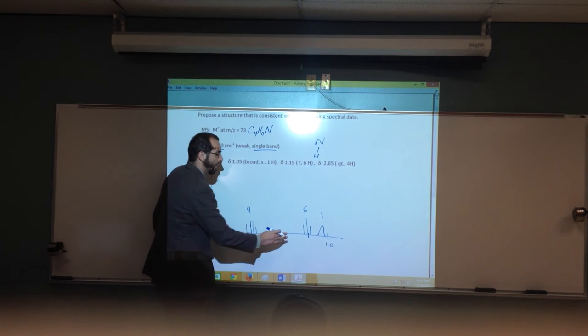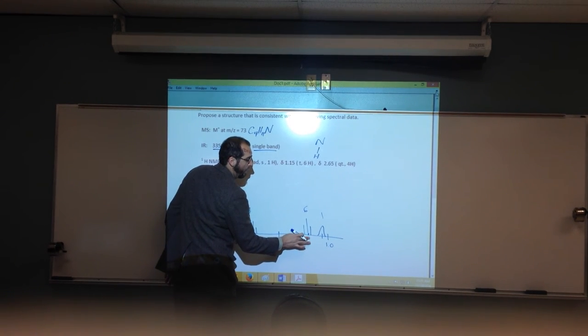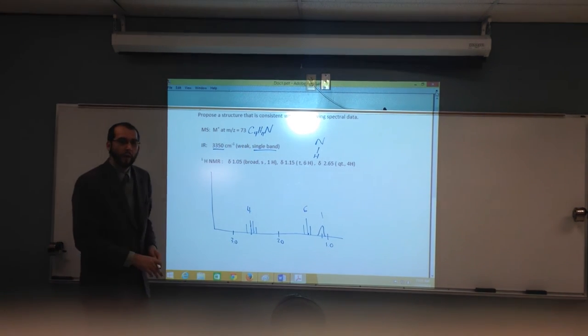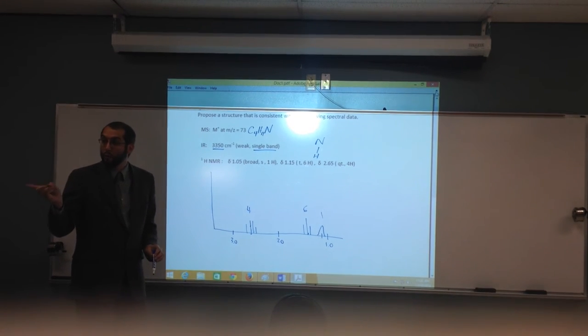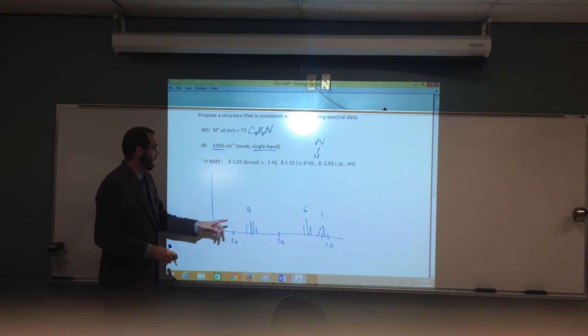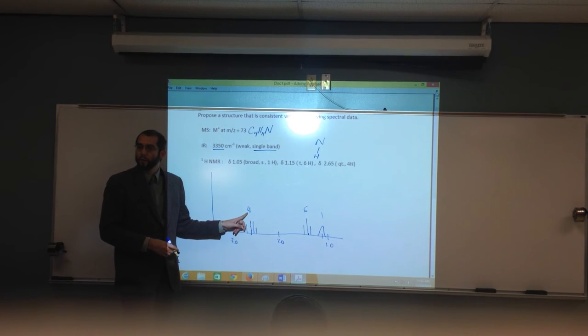What is this saying if we've got a triplet? What does that tell us? That there's two neighboring hydrogens. But this says four. What does that mean? That's not two.